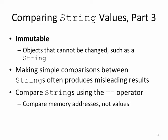That's because strings are immutable. Immutable means that it cannot be changed. And so, when we're making a comparison between strings using the == operator, we are comparing that memory address and not the values, not the string itself.